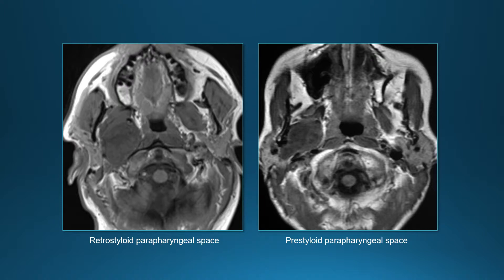The best way to distinguish pre- from retrostyloid is to look for the carotid artery. A retrostyloid parapharyngeal space mass is going to displace the carotid artery anteriorly and medially, whereas a pre-styloid parapharyngeal space mass will be in front of the carotid and not displace it — it may push it slightly backward against the spine, but really doesn't have anywhere to go.